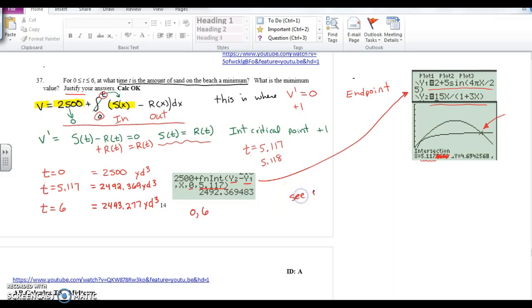So I would say, see the table, the least amount of sand is at T equals 5.117 hours and is 2492.369 cubic yards.